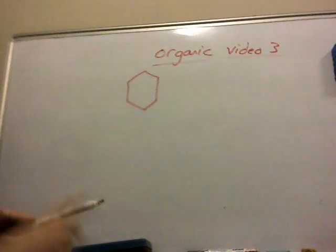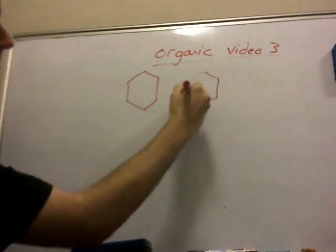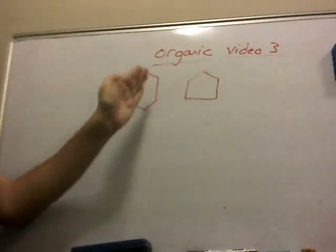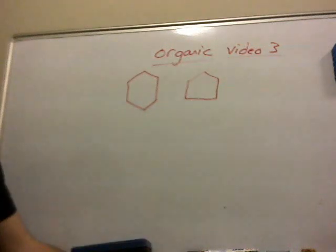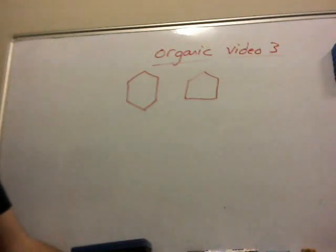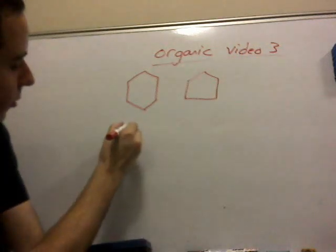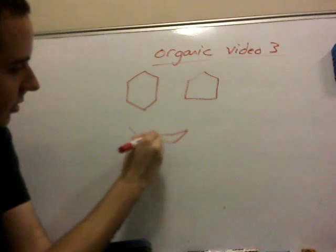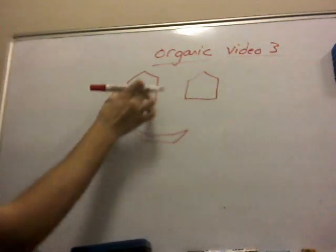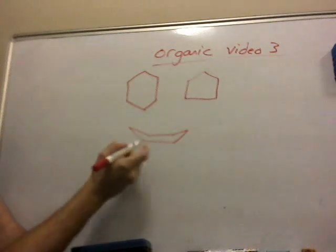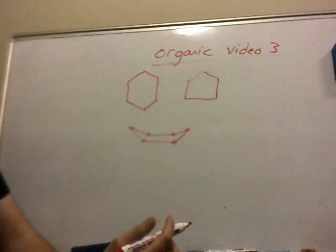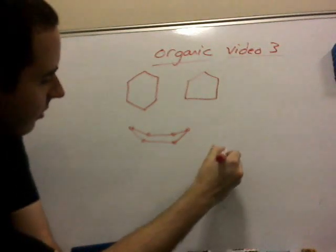Now let's talk about cyclohexane — any organic major in college encounters this extensively in organic chemistry two. The boat conformation ranks alongside the eclipsed formation as the least stable, in the sense that the repulsion field of all the electrons is at a maximum. This is a three-dimensional cyclohexane — carbon, carbon, carbon, carbon, carbon, carbon — and it's called the boat because it looks like a boat.